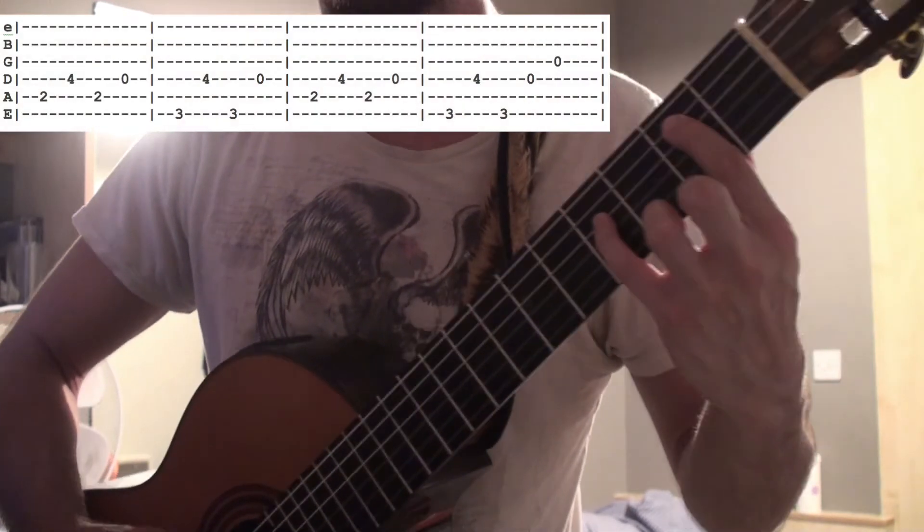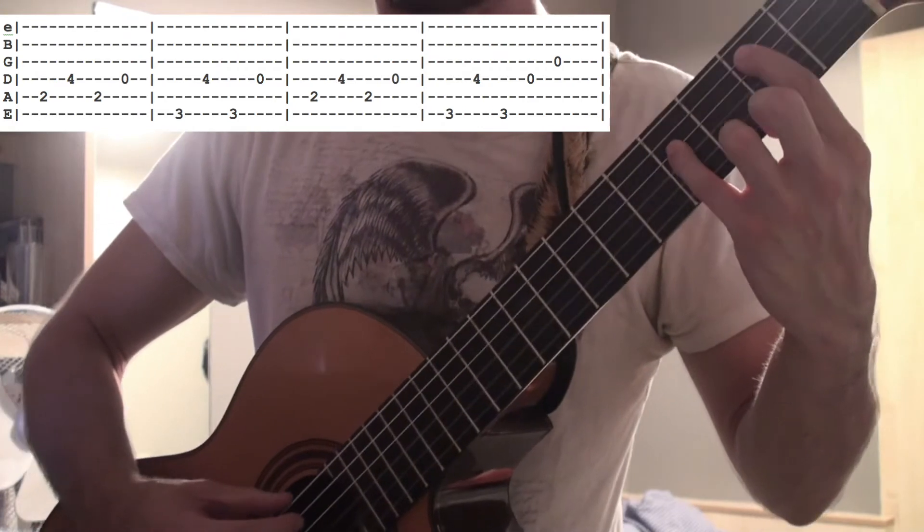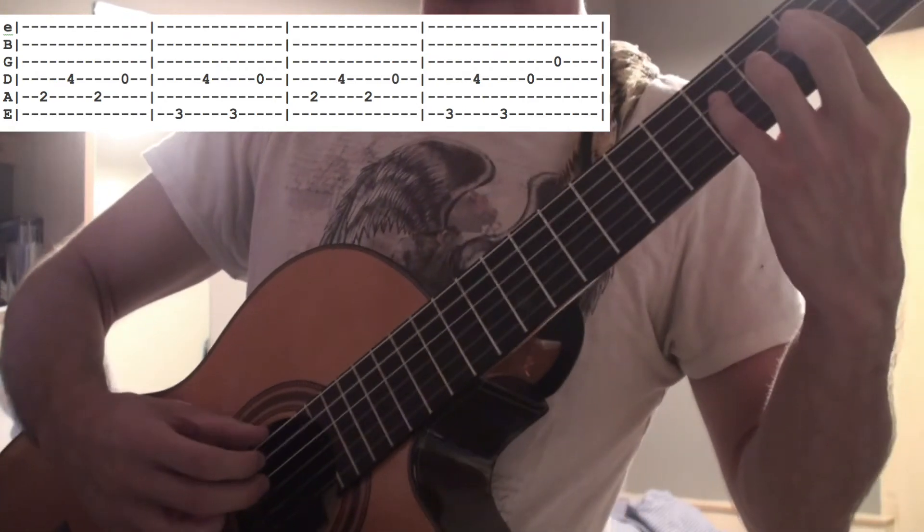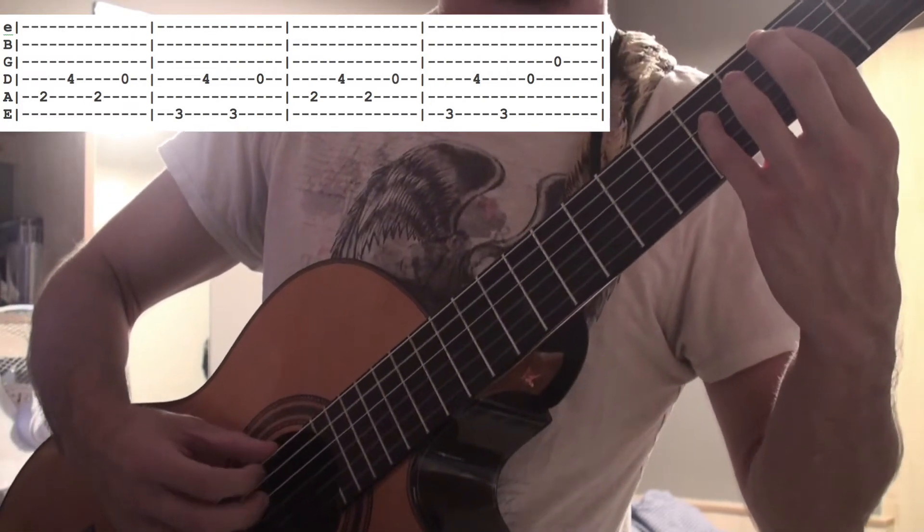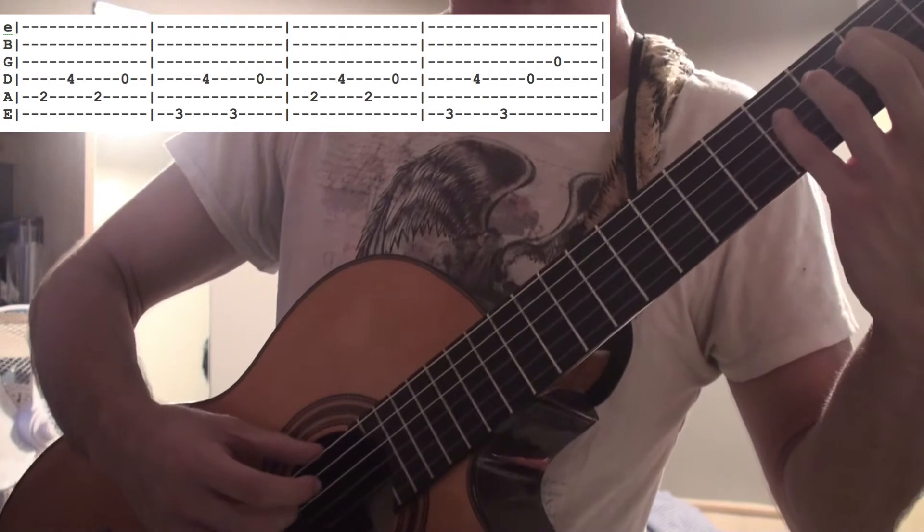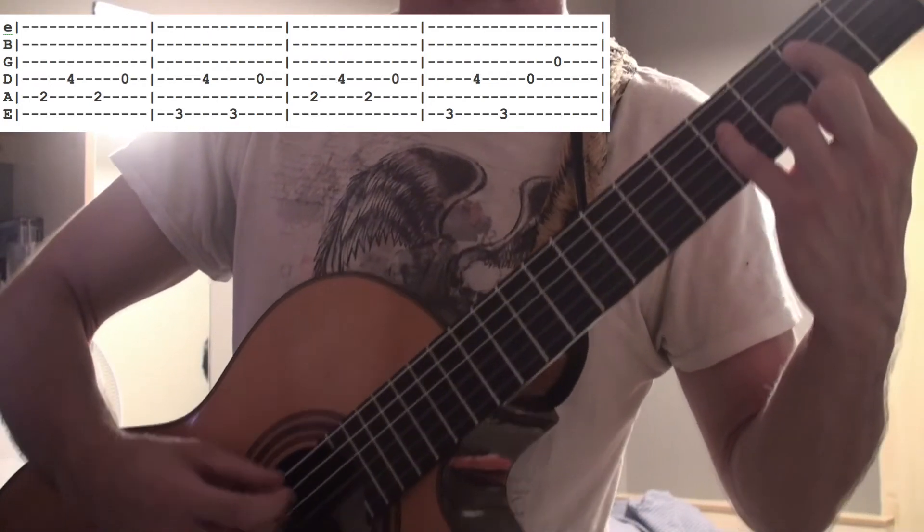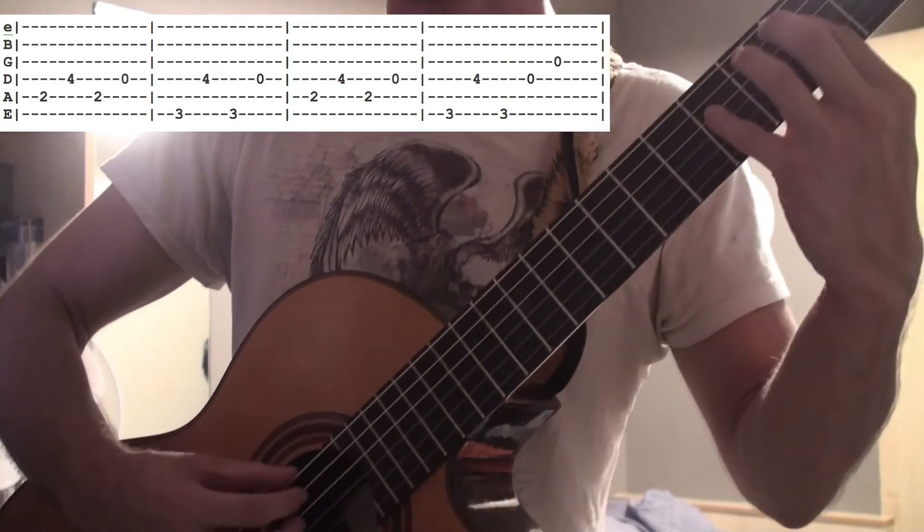On the A string, you hold the 2nd fret, and on the D string, you hold the 4th fret. So you play the A string, then you play the 4th fret, then you play the 2nd one again. So it's A-D-A. Then you go back to the 4th one, but instead of playing it with your hands still on the 4th fret, you take your finger off so it's just open, it's just 0.